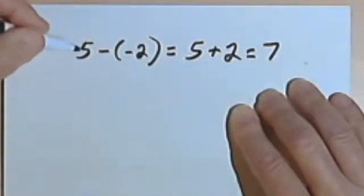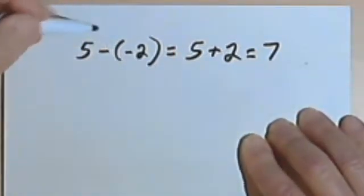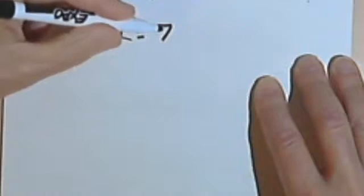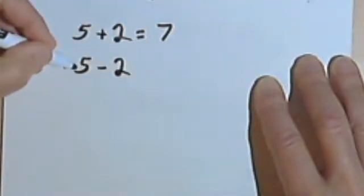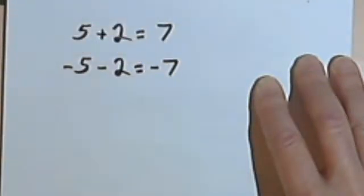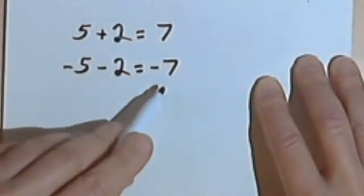Anything else we can look at as a normal addition problem — let's call it combining. If you have two positive numbers, like 5 plus 2, you get a positive answer. If you combine two negative numbers, like negative 5 plus negative 2, you're going to get a negative answer. Two positives give positive; two negatives give negative.